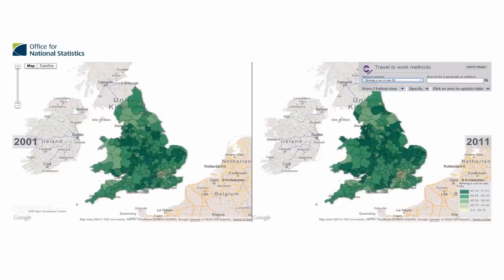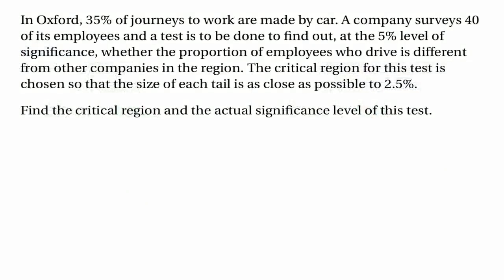On the other hand, there are parts of the country where the proportion of people travelling to work by car has gone up — for example, parts of Wales. In Oxford, 35% of journeys to work are made by car. It's not exactly 35%, but unless we pick a percentage that's a multiple of 5 it becomes very fiddly to use the probability tables. So let's assume the proportion of journeys made to work by car is exactly 35%.